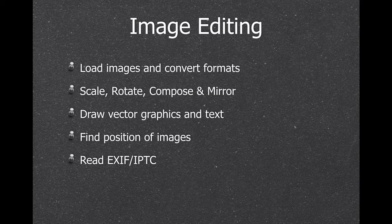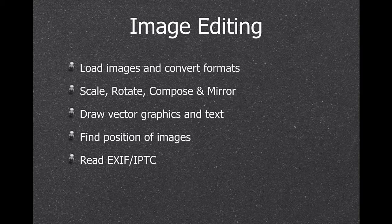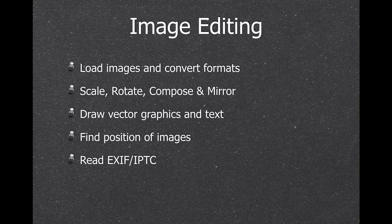We have image editing functions — you can load images, save them in a new format, and many people use this to convert among the 25 supported formats to JPEG or PNG. You can scale and rotate pictures, ensure they're upright or saved as thumbnails. You can draw text and vector graphics on pictures — for example, one user writes a watermark on pictures not yet purchased. You can find the position of color pixels in an image and read EXIF tags and IPTC metadata.